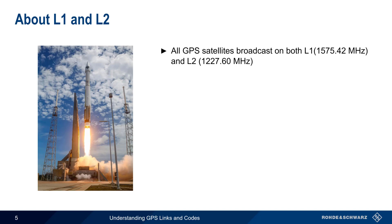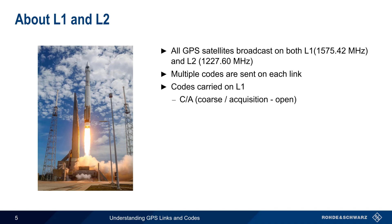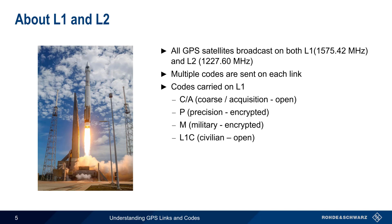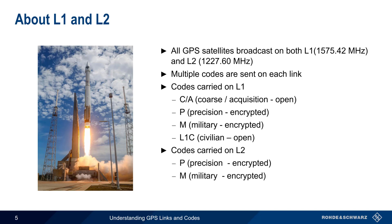All GPS satellites broadcast on both L1 and L2, and each link carries multiple codes. On L1, we have the CA or coarse/acquisition code, which is an open or unencrypted code. L1 also carries two encrypted codes, the P or precision code, and the newer M or military code. And there's a newer open civilian code on L1 called L1C. Likewise, there are multiple codes carried on L2. The P and M codes are also transmitted on L2, as is the newer L2C civilian code. At this point, it would probably be a good idea to explain what a code is.